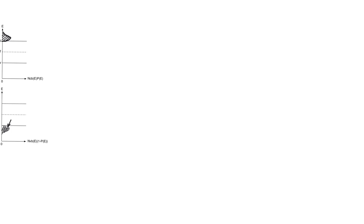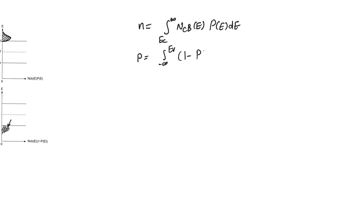We concluded that the density of electrons and holes can be written as integrals: for electrons, the integration over the whole conduction band of the density of states N_CB(E) times P(E); and for holes, the integration over the whole valence band of (1 - P(E)) times N_VB(E). These integrals can be calculated, and we can find a much simpler expression for N and P than the integral form.